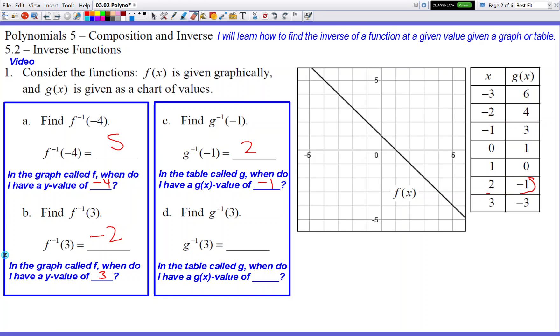So let's erase these circles. All right, and let's do our next problem. Okay, so it says inverse of g is 3. So in the table called g, when do I have a g value, a g of x value of 3? So let's see, where do I have a g of x value of 3? Here's my g of x value of 3. What x value corresponds to him? Hmm, negative 1 does. And there you go.